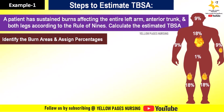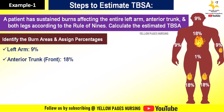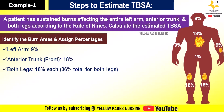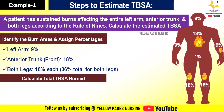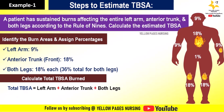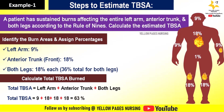As per the example: left arm is 9%, anterior trunk (front) is 18%, and both legs are 18% each, so 36% in total for both legs. Calculating total body surface area burnt: TBSA = left arm + anterior trunk + both legs = 9 + 18 + 18 + 18 = 63%. So the total body surface area burnt is 63%.